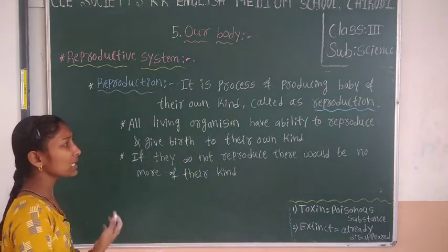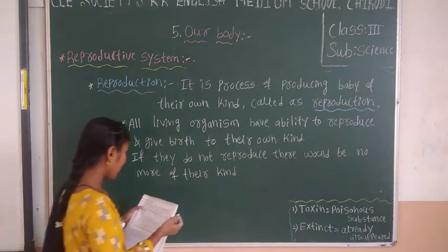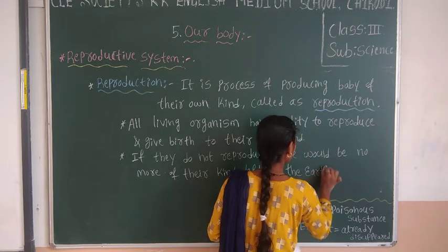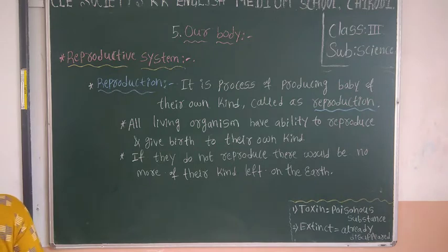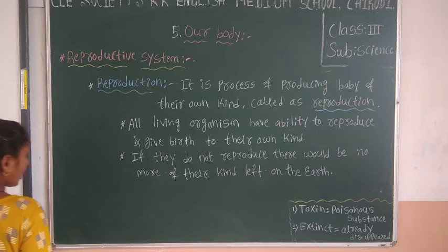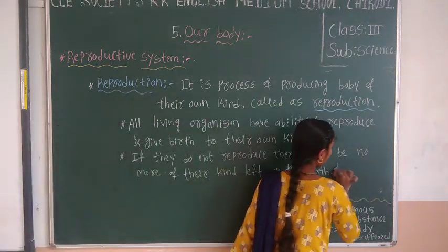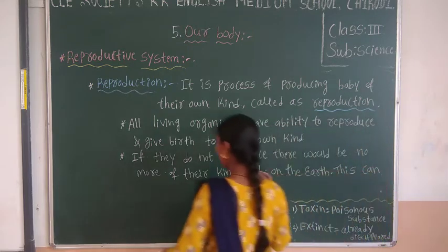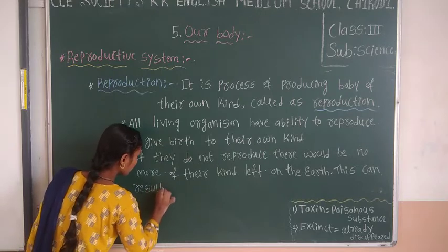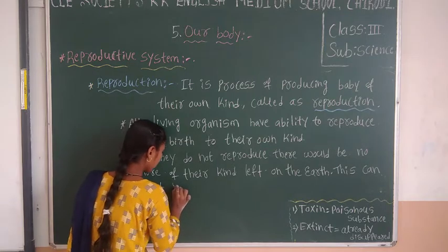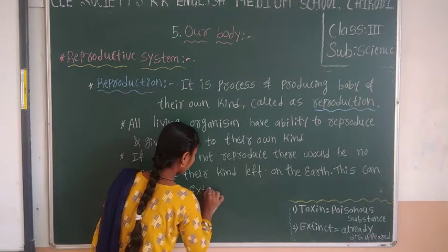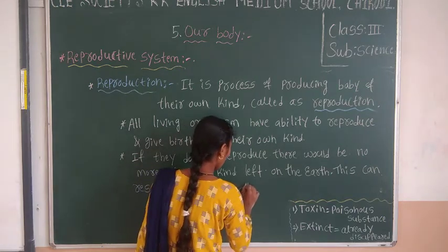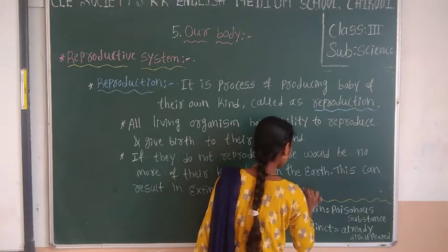Once living organisms do not produce, there is no organism of their kind left on the earth. This can result in the extinction of that organism. The number of animals decreases, slowly it becomes extinct — meaning they disappear from our earth.